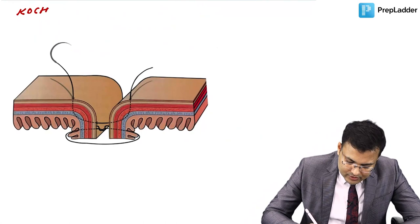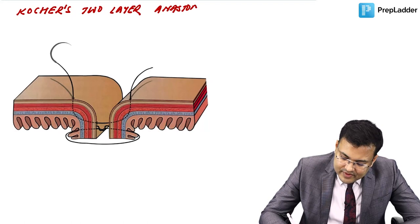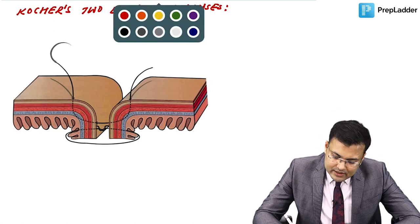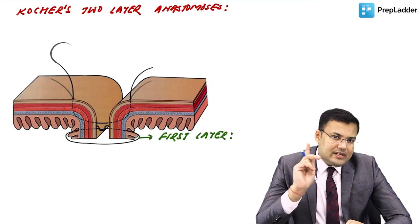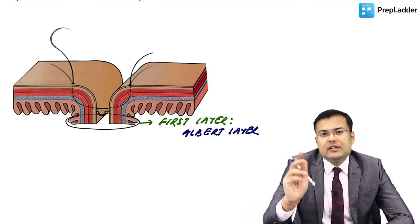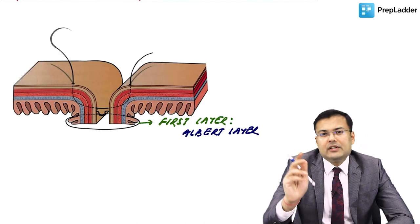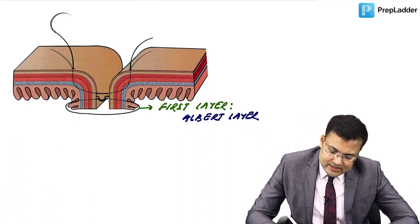In cocker's two-layer anastomosis: the first (Albert) layer is the continuous catgut layer — nowadays vicryl is used instead. The second (Lambert) layer is the interrupted silk layer. This was initially favored but single layer extra-mucosal anastomosis is now preferred.